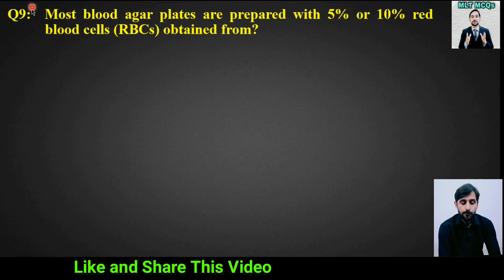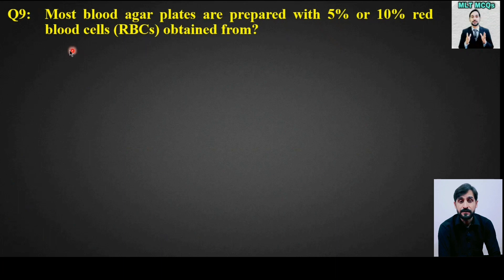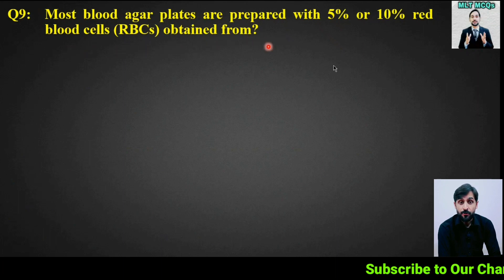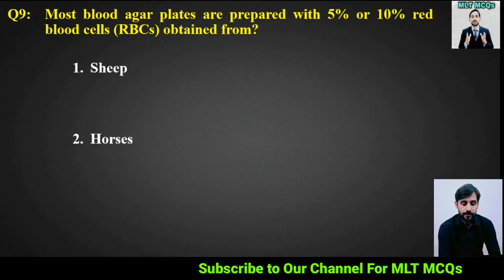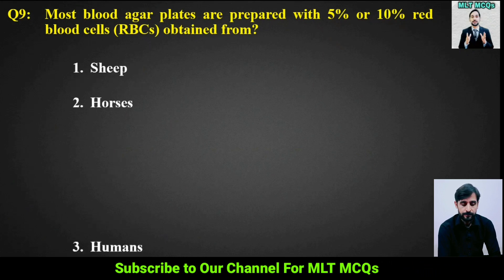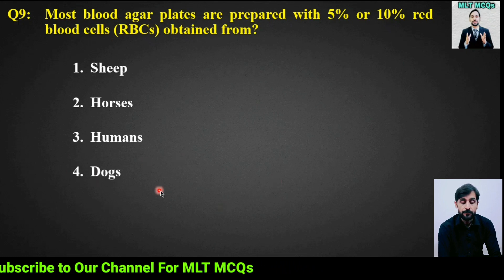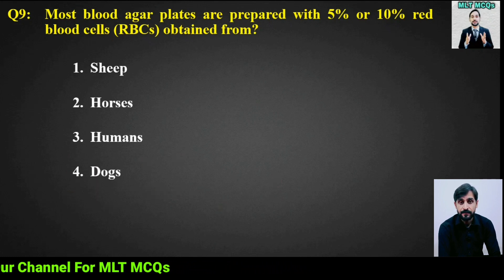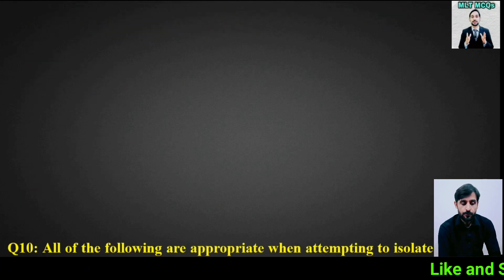MCQ number 9: Most blood agar plates are prepared with 5% or 10% red blood cells obtained from — options are: sheep, horses, humans, or dogs. The right answer is option 1: sheep.